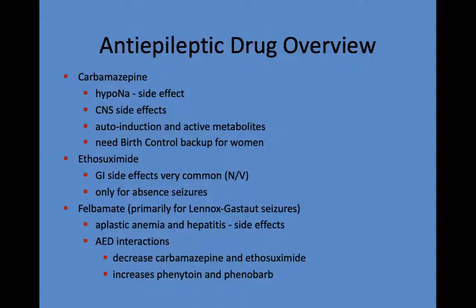A brief overview of individual agents: Carbamazepine has significant CNS side effects and auto-induces its own metabolism, so expect a drop in serum level about 4-6 weeks after starting. Target serum level is usually 8-12 for seizure disorder. Women taking Tegretol need birth control backup due to enzyme induction. Ethosuximide has GI side effects and is only approved for absence seizures. Felbamate is rarely used due to risks of aplastic anemia, hepatitis, and drug interactions — occasionally seen for Lennox-Gastaut seizures.